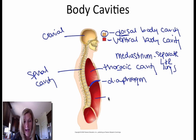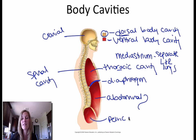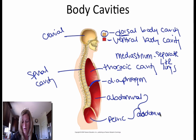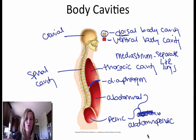Then we have the abdominal cavity, and here is the pelvic cavity. Collectively, each of these two cavities are known as the abdominal pelvic cavity. So that's when you include both the abdominal and the pelvic cavities.